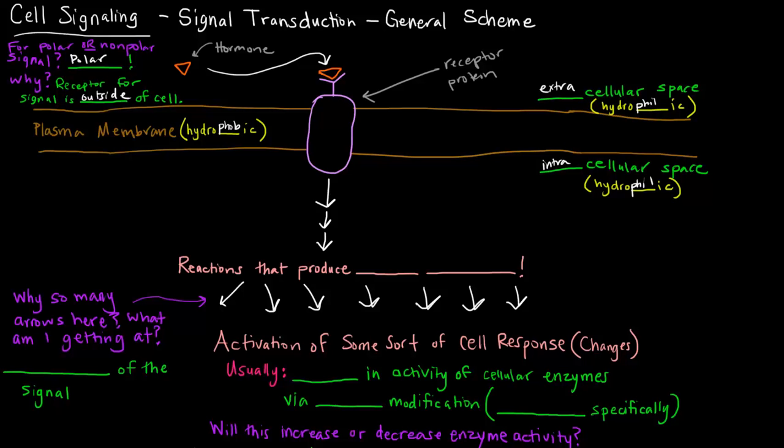These arrows sort of represent a series of reactions or a series of steps. Now those series of steps or reactions produce second messengers and they produce tons of them. And that's part of the reason I have so many of these arrows here.